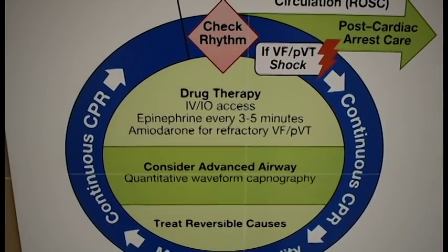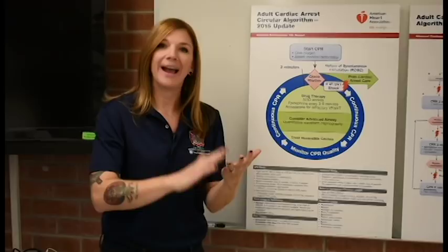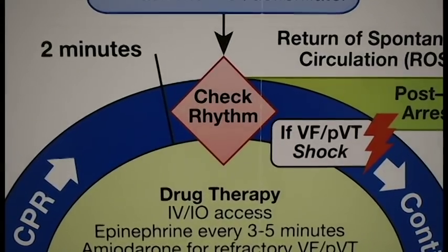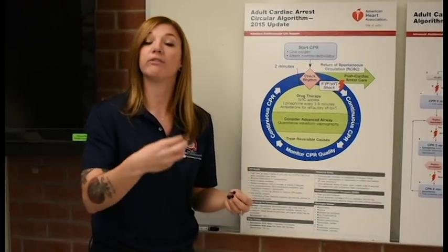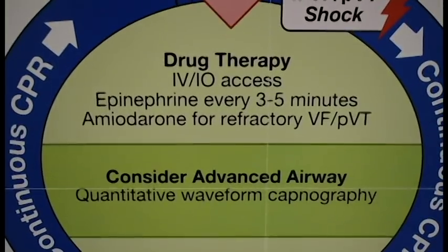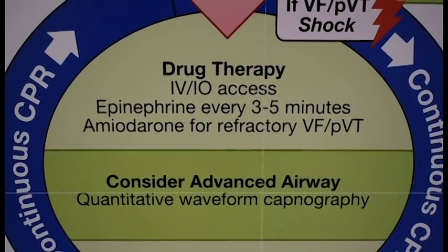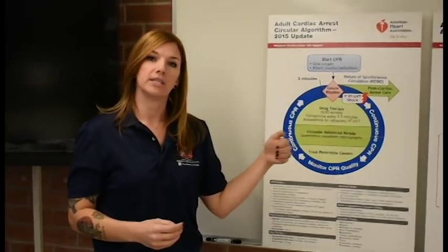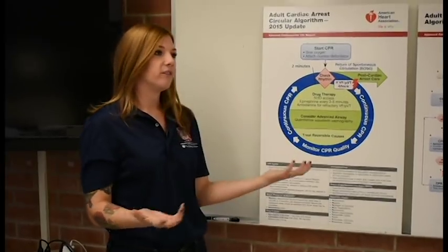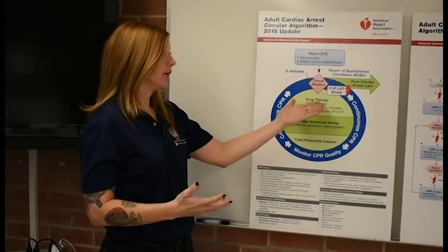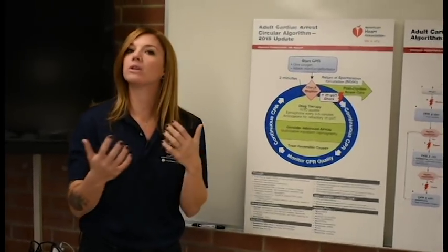At that point, after two minutes, you should be getting an IV established, bagging your patient, doing all the things that are appropriate. If we are in V-fib or pulseless V-tac again, you should be defibrillating your patient. Then after that second subsequent shock, you should be looking at starting medications. Your first line drug is epinephrine, one milligram, one to ten thousand. It goes through a circular motion — every three to five minutes you're giving epi. If you're refractory to V-fib or pulseless V-tac, you should be thinking about amiodarone or lidocaine.